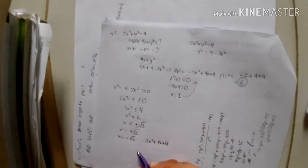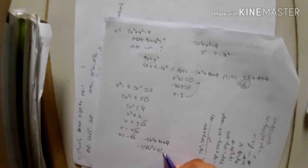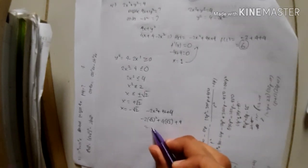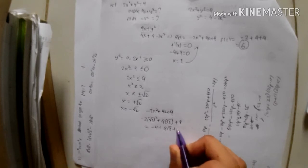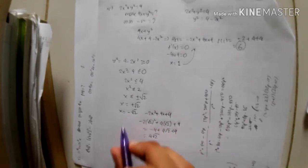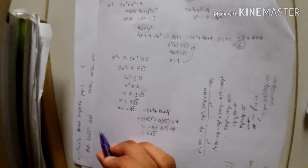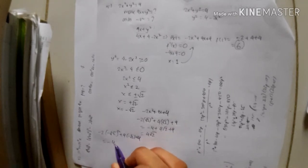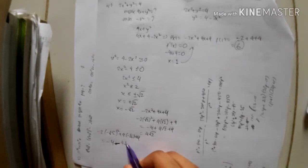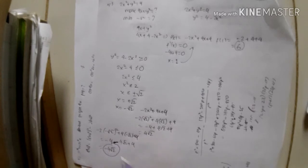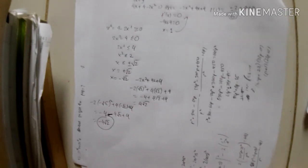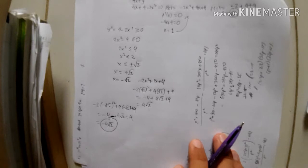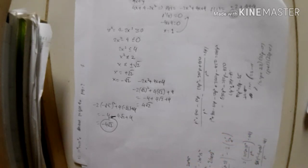If we put x = √2: -2(√2)² + 4√2 + 4 = -4 + 4√2 + 4 = 4√2. If we put x = -√2: -2(-√2)² + 4(-√2) + 4 = -4 - 4√2 + 4 = -4√2. So the minimum value of 4x + y² is -4√2. That is the correct answer.